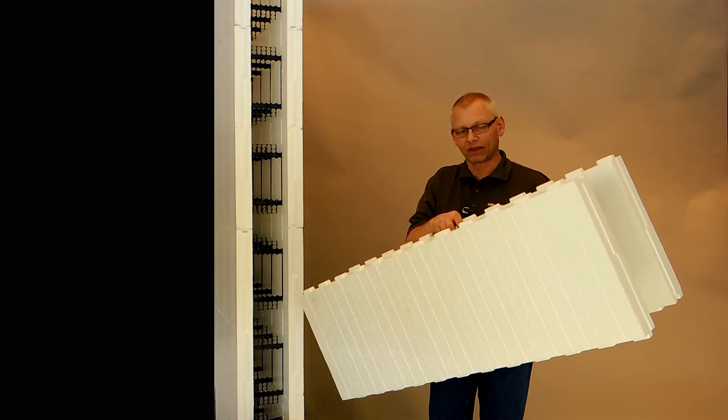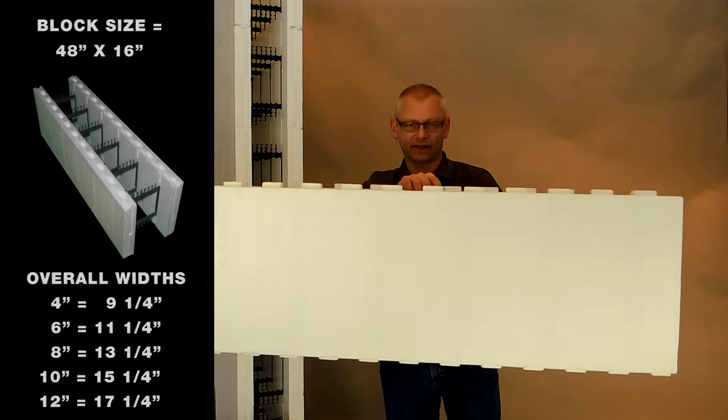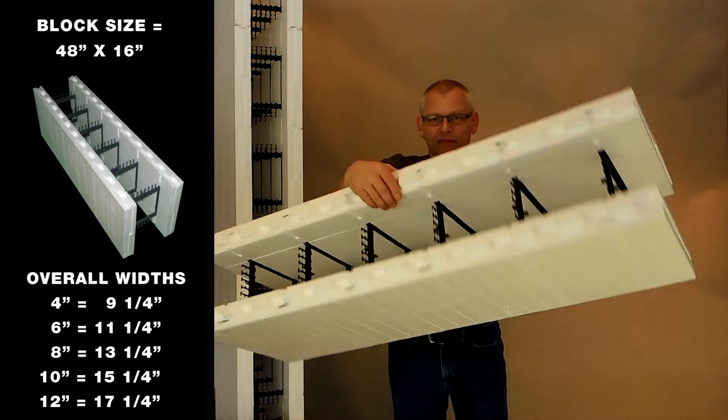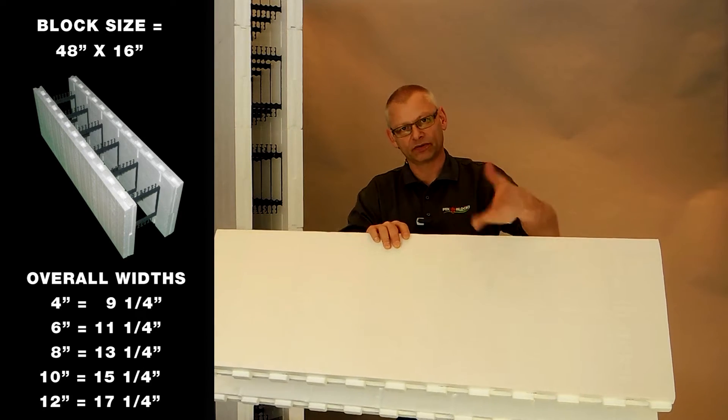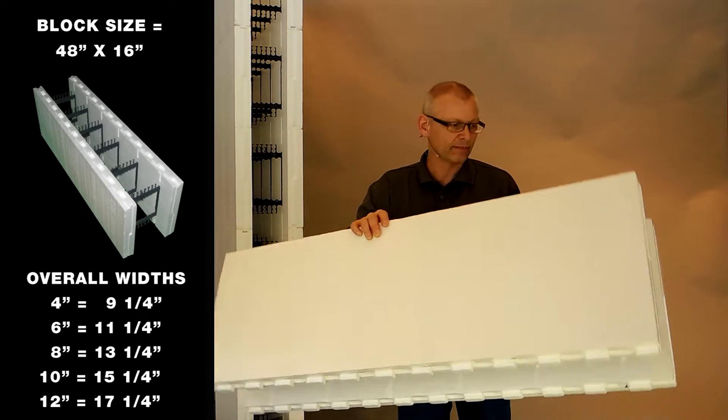Let me show you the Fox Block straight block. This block is four feet long and 16 inches high. It's reversible, works both ways. I can make a cut and use both pieces because it's reversible. You have a lot less waste this way.